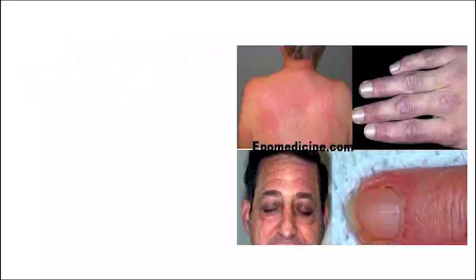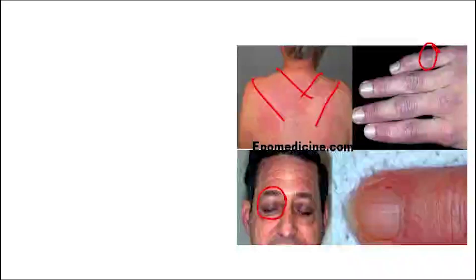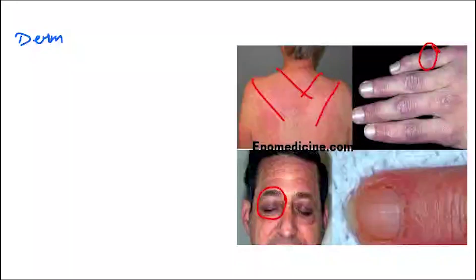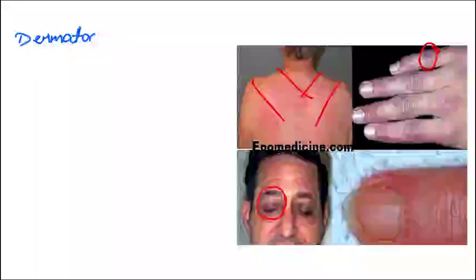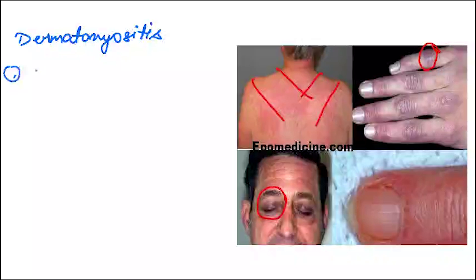This is the last one. I want you to see three of these signs. First is this, then this, and then this. As I have already given you multiple hints, I am sure you must have recognized it by now. We are talking about dermatomyositis. First, I will tell you about Gottron's sign.